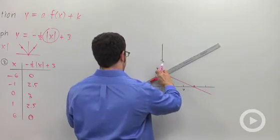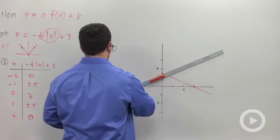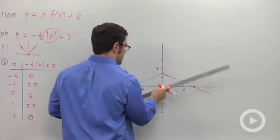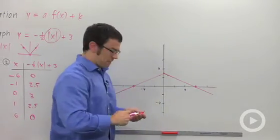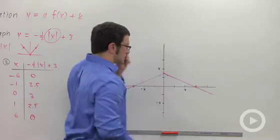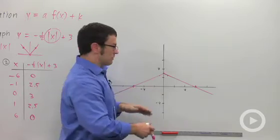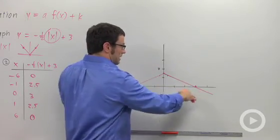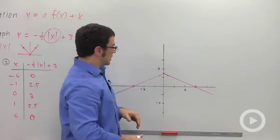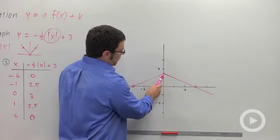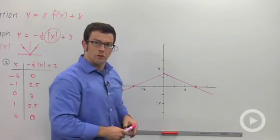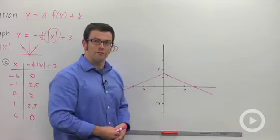And you can see that the graph is reflected across the x-axis. Normally, the absolute value graph opens upward like this. Now this one's opening downward. You can also see the vertical compression. The slope is less steep than absolute value usually is. And you can also see that the vertex has lifted up 3 units. So you can see that vertical shift. This is our final graph.